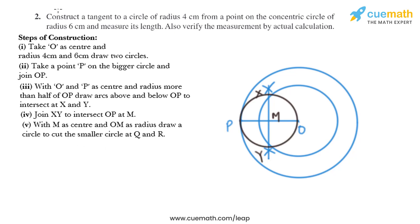So we'll draw a circle with OM as radius like this. Now I'll mark the point of intersection of this circle as Q and R.